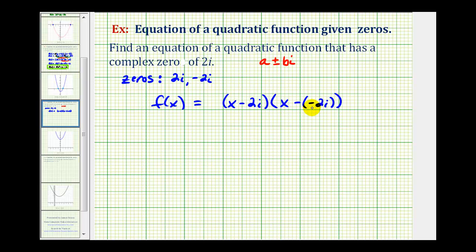Let's simplify the second factor, and then we can multiply this out. We'll have f(x) equals (x - 2i) times (x + 2i). It's important to notice that when the zero was positive 2i, the factor was (x - 2i), and when the zero was negative 2i, the factor was (x + 2i).